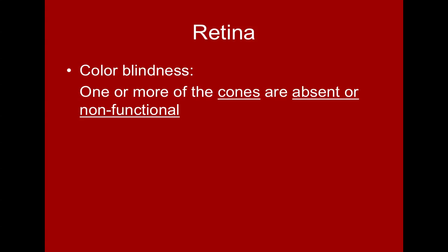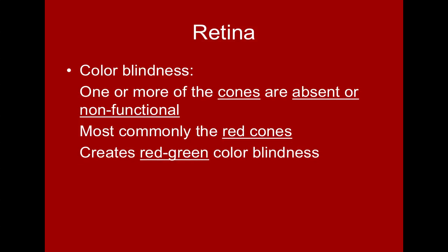Colorblindness means that one or more cone types are either absent or non-functioning. Typically this is most common in the red cones — if the red cones are absent or not functioning, this creates the most common type: red-green colorblindness. Colorblindness is also a sex-linked trait; the genes for coding the cones are on our X chromosomes. We find colorblindness more commonly in men because they only need one defective gene to be colorblind, whereas women need two.